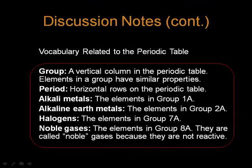On the periodic table, this is the vocabulary that we use to describe the table. The first is a group. A group is a vertical column in the periodic table. The elements in a group have similar chemical properties. The periods are horizontal rows.